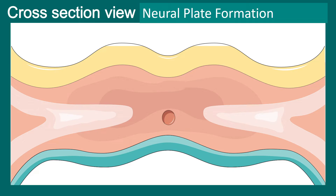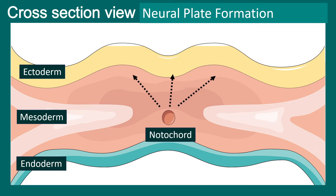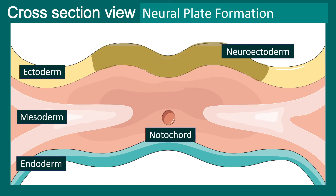Now let's look at the neural tube closure from a cross-sectional view. We are not looking at the embryo from the top view; we are looking at it from the cross-sectional view. Here are the three germ layers, and this is the notochord. The notochord secretes several factors and morphogens, importantly sonic hedgehog. These things actually induce the ectoderm which is just above it, and this ectoderm is now termed neuroectoderm.